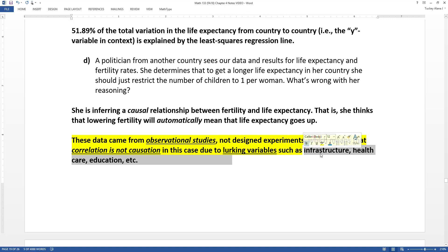Countries that have a lot of infrastructure, for example, tend to have lower fertility, higher life expectancy. Countries where education, in particular of women, because women are the ones that are having the children. So if women are more educated, they tend to have less kids, tend to wait longer to have their first child.